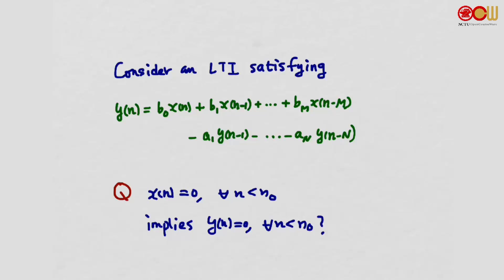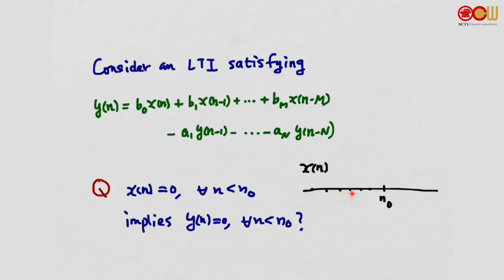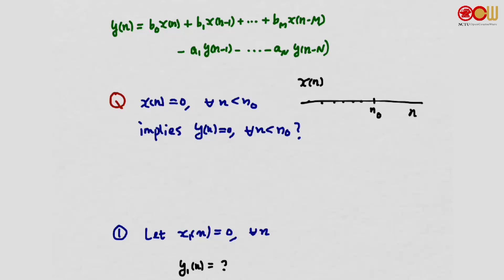We mentioned that the output y should be 0 before any input comes in. Let's look at this more carefully. Consider an LTI system satisfying the linear constant coefficient difference equation. Suppose the input xn equals 0 for all n less than n0 — there may be non-zero samples at or after n0. Does this imply the output is also 0 for all n less than n0? To investigate, let's consider two cases.